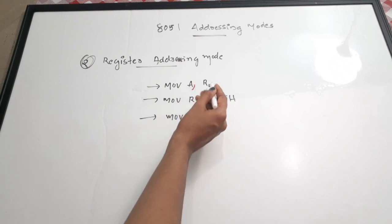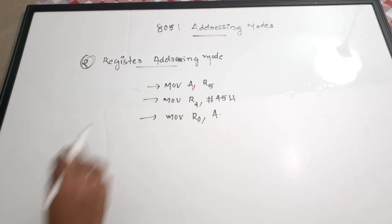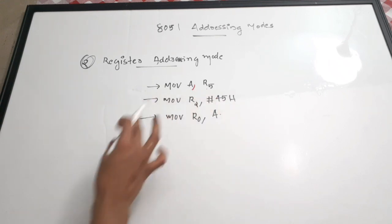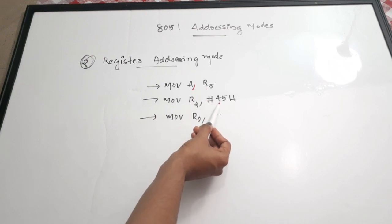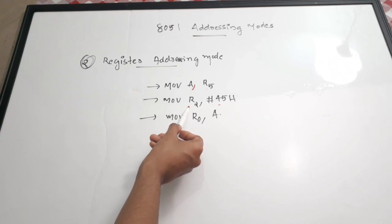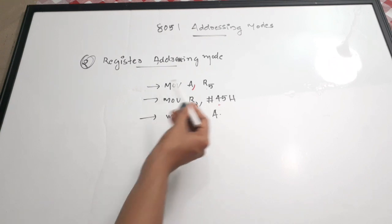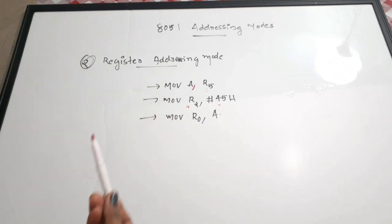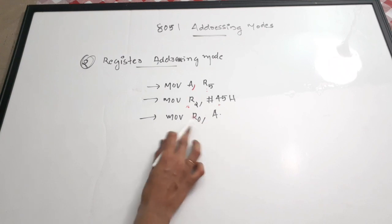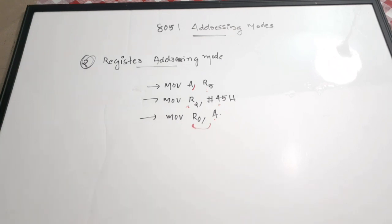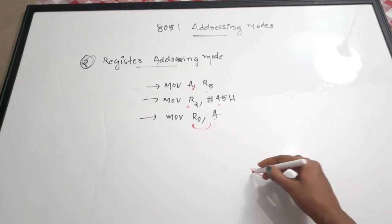For example, MOV A, R5 means the value present in R5 is passed to the accumulator. MOV R2, #45h is also register addressing mode because, although 45 is an immediate value, the destination is register R2. MOV R0, A also has a register as destination. For register addressing mode, remember that either source or destination must be registers R0 to R7.